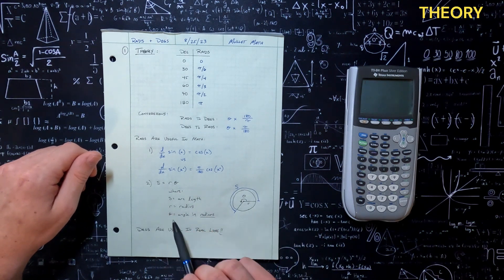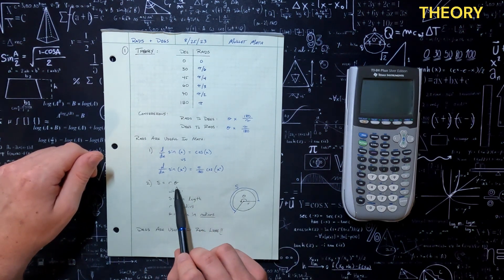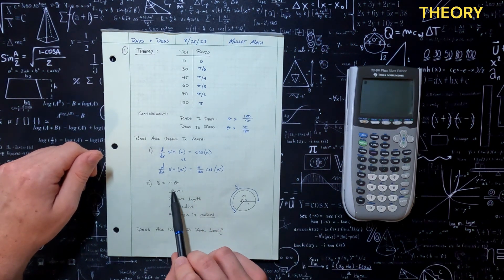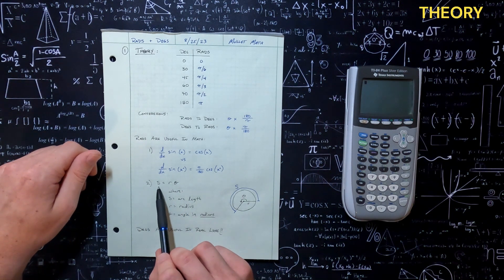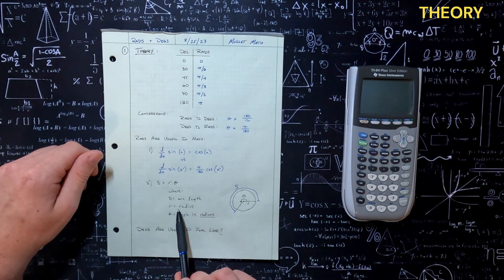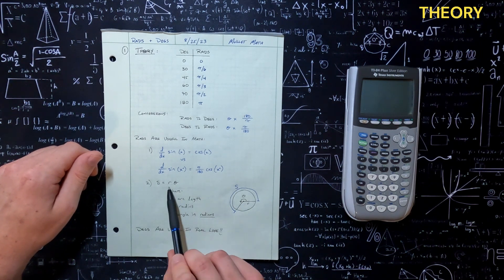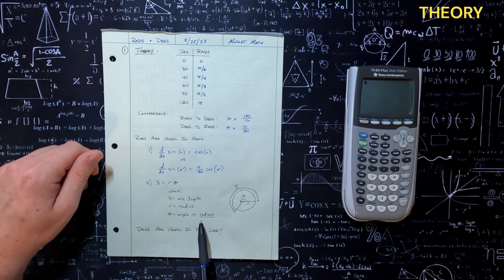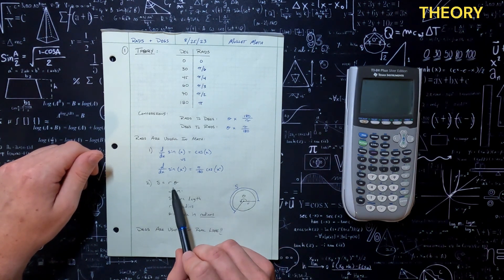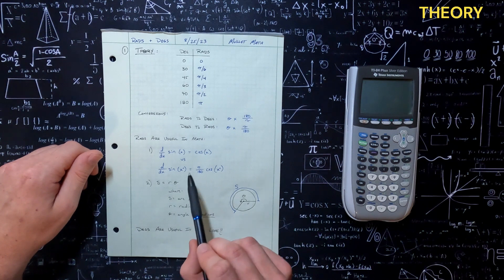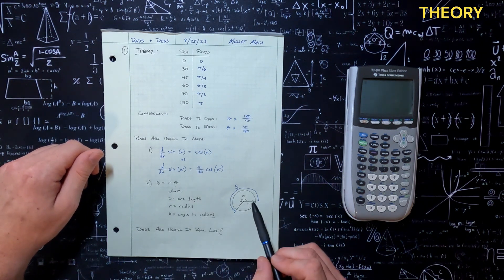Moving on to reason number two: we have this arc length equation. The arc length S equals the radius of a circle, R, times theta. This theta is the angle in radians. This equation only works — and I repeat, be cautious — only works when we have radians. That's another reason we like to use it, because it's simple.